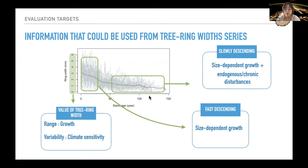The tree ring growth trend usually consists of two parts: fast descending and slow descending parts. Almost constant volume of wood should be added to growing trunk, over increasing surface area. So tree ring trends usually have a decreasing trend by size. The first, fast descending trend for young trees, which are mostly affected by this size dependent growth. And the latter, slowly descending part is related to size dependent growth and the endogenous and chronic disturbances, because competition for resources can compensate the size dependent decrease.